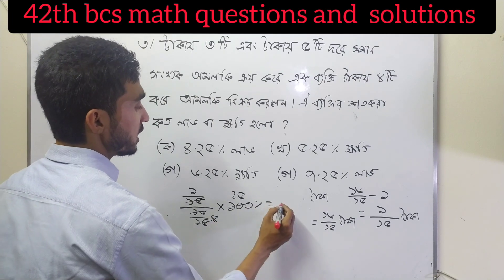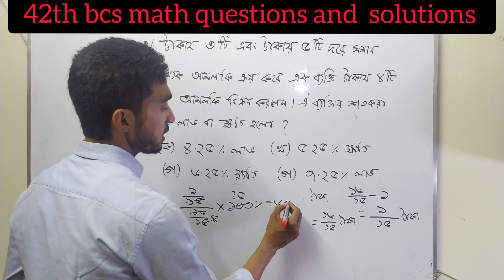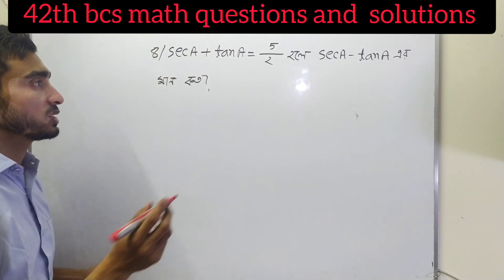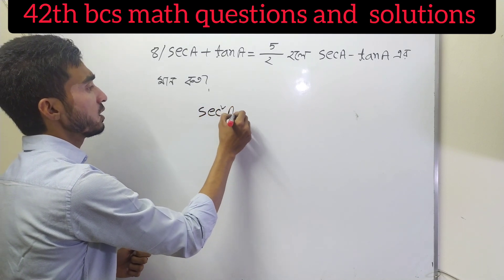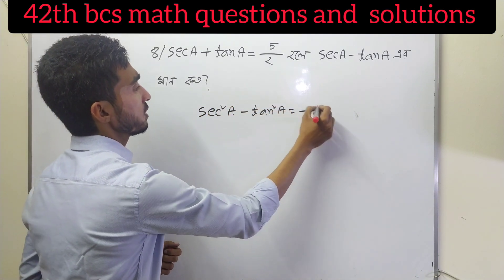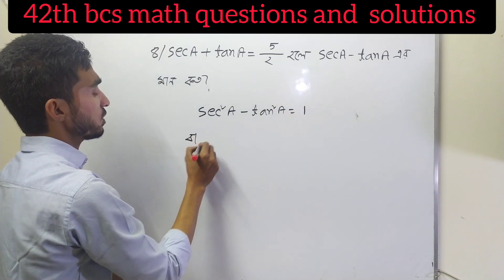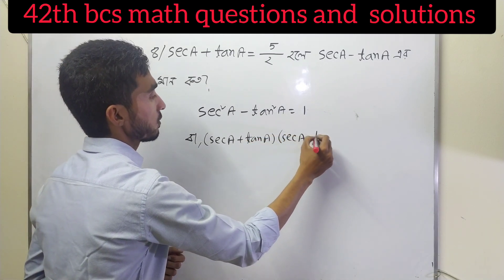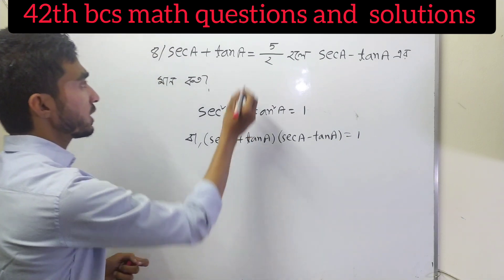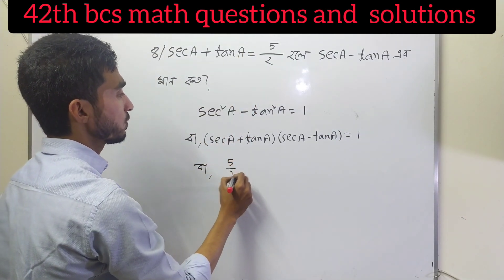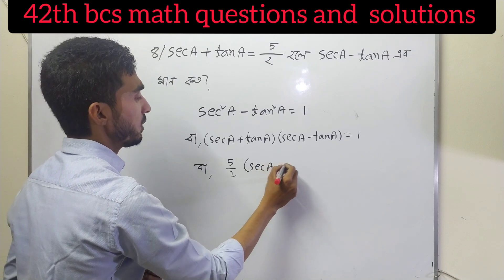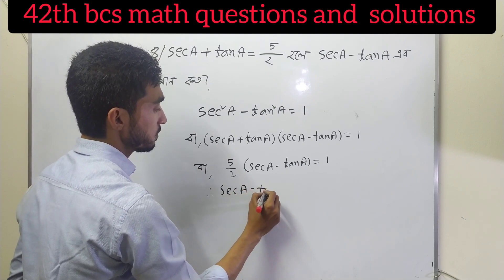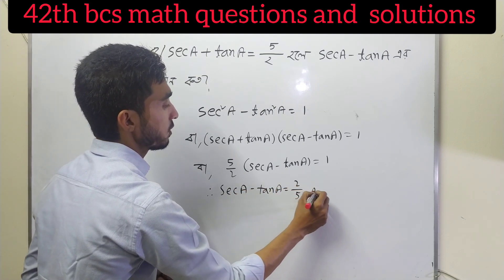Using the a squared minus b squared formula, this is a plus 10 into a minus 10. So a equals to a one, and second minus 10 a equals to a one, so second minus 10 equals to b two by five.